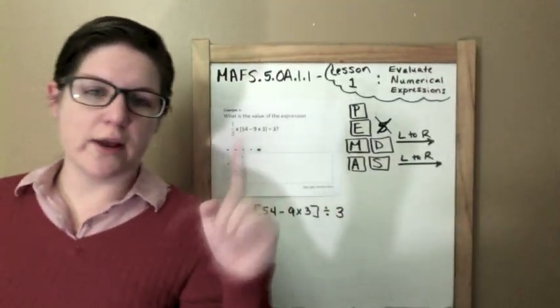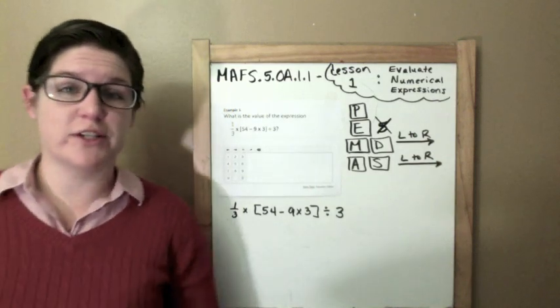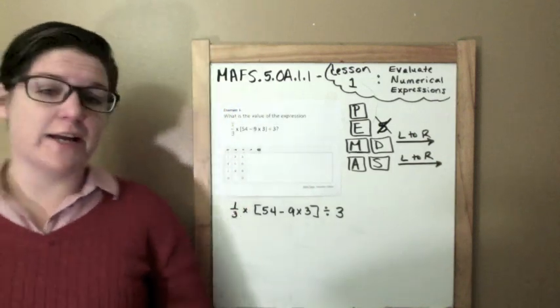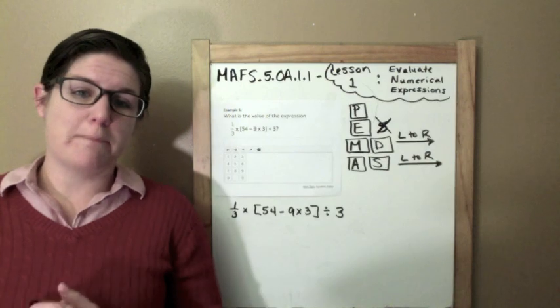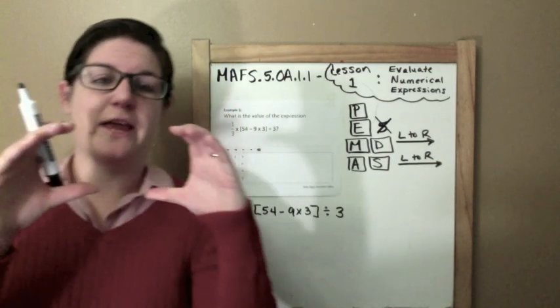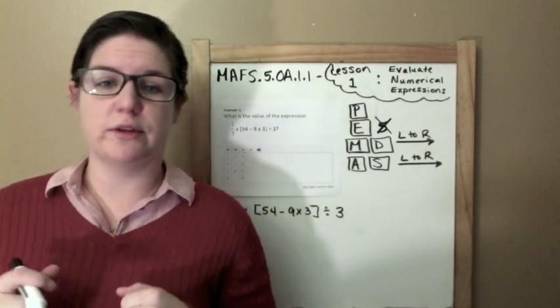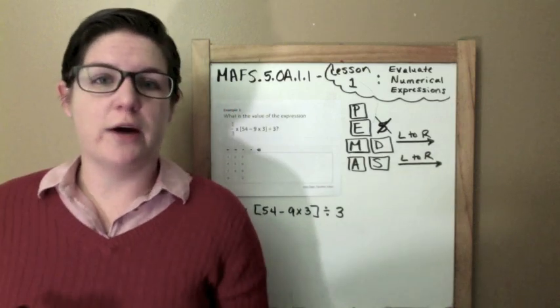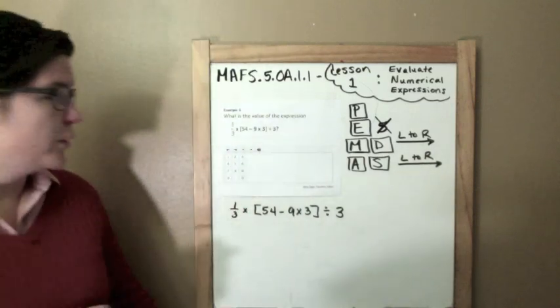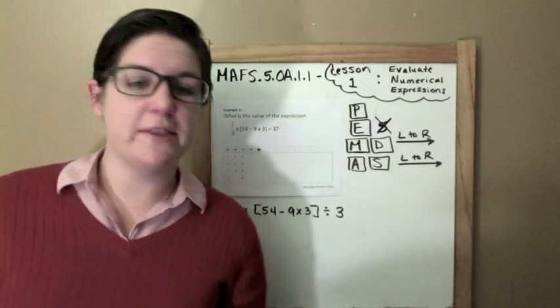Example one. What is the value of the expression that says 1 third times 54 minus 9 times 3, all in a bracket, which is very similar to parentheses. Divided by 3.